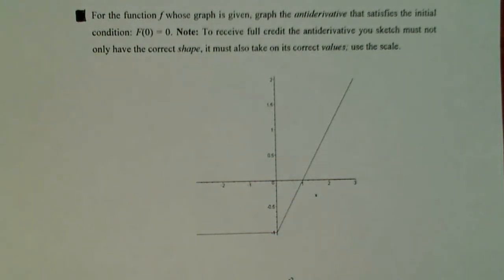For the function f whose graph is given, graph the antiderivative that satisfies the initial condition f of 0 equals 0. Note, to receive full credit, the antiderivative you sketch must not only have the correct shape, it must also take on the correct values, use the scale.